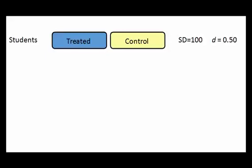For example, suppose that we run a simple randomized study where students are randomized to either treatment or control, and the outcome is the student's score on the SAT test. Suppose that the difference in means is 50 points. The standard deviation of the SAT scores is 100 points, so the standardized mean difference is 50 over 100, or 0.50.